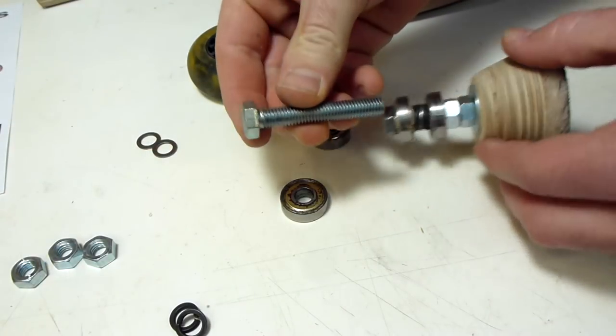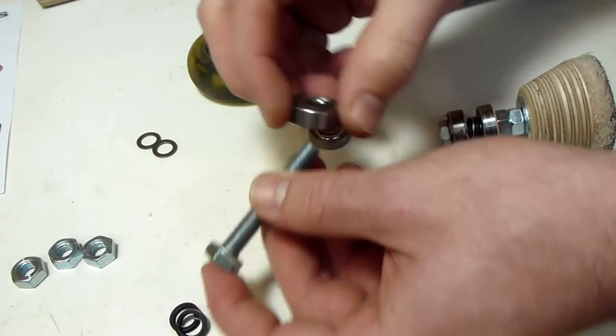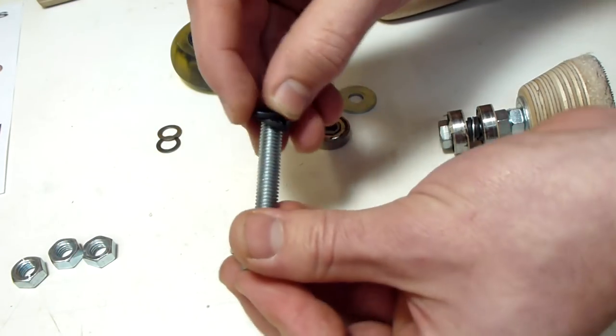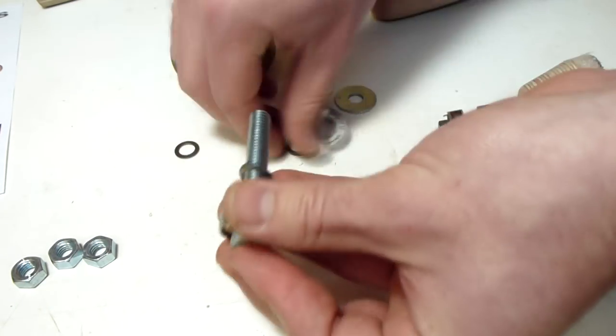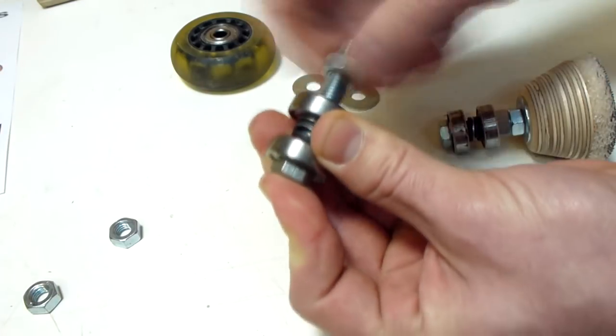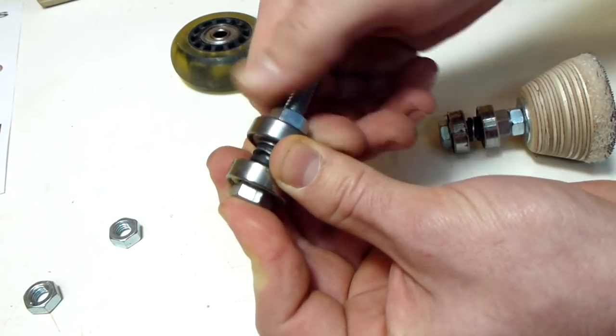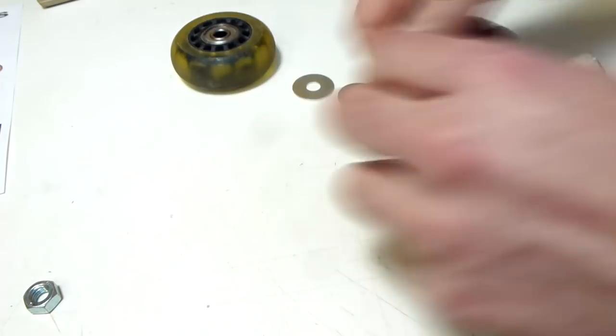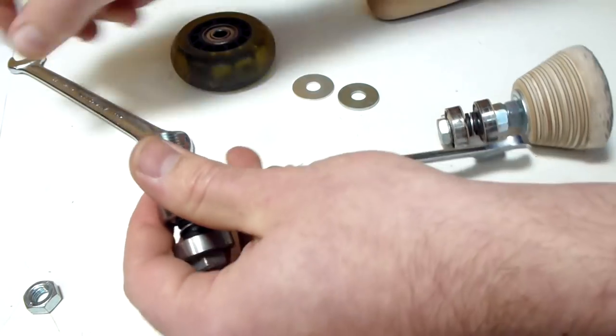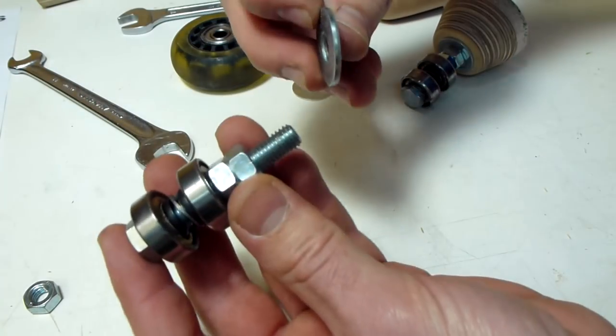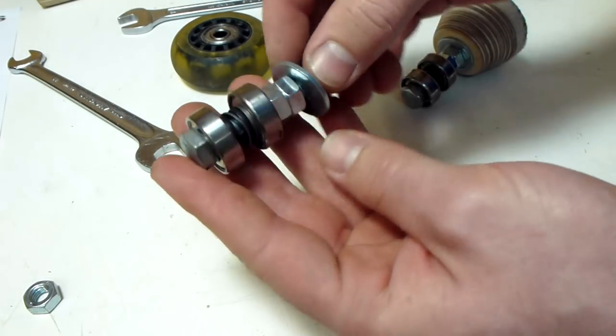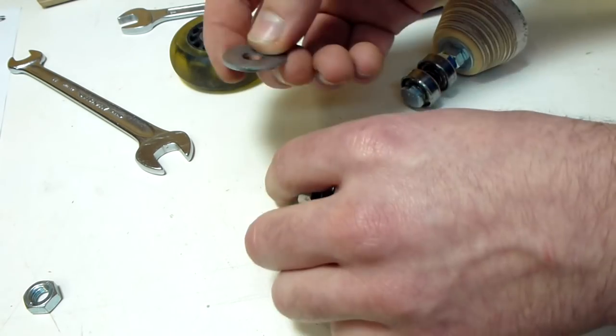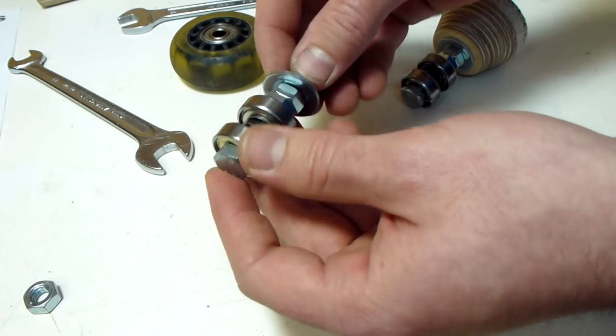The arbor itself consists of a bolt, two bearings that you get from roller blade wheels, some spacer pieces between the bearings, two nuts that get locked in front of the bearings, and a thick washer that acts as a flange. There are different kinds of washers. I would recommend a thicker one because it acts as a flange and so it has more stability.